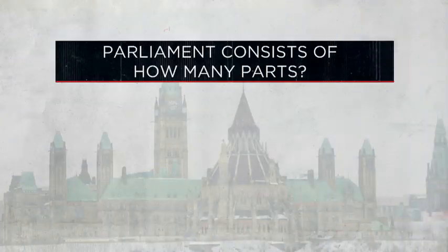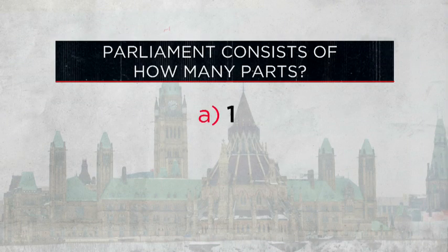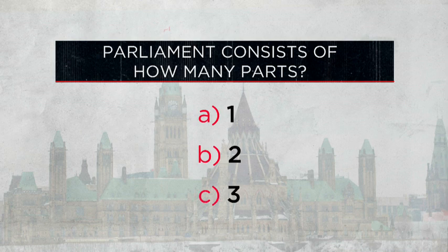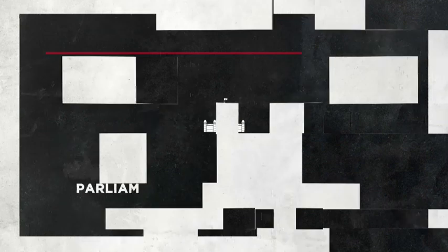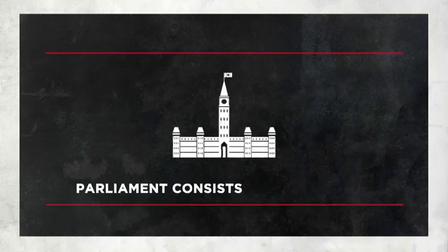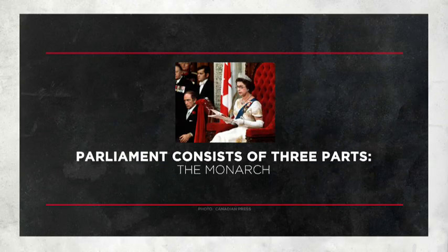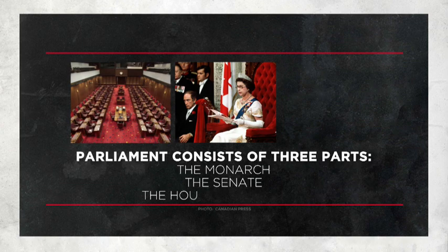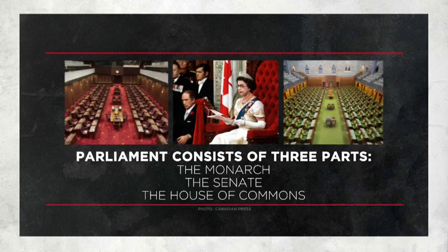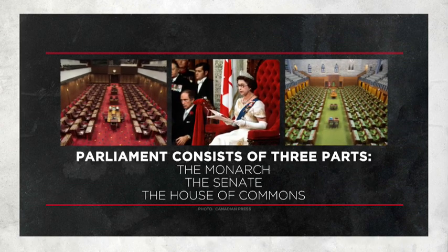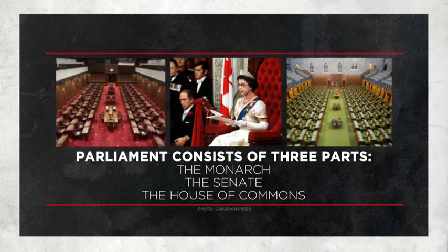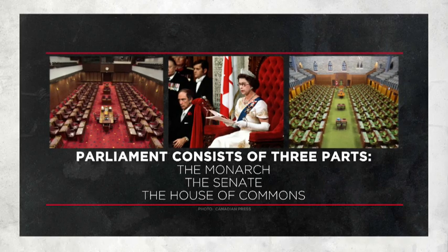Parliament consists of how many parts? Is it one, two, or three? The answer is three. Parliament consists of three parts: the Monarch, the Senate, and the House of Commons. These three parts combine to decide laws and determine policies.